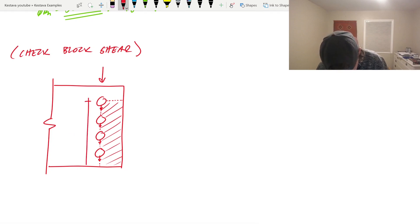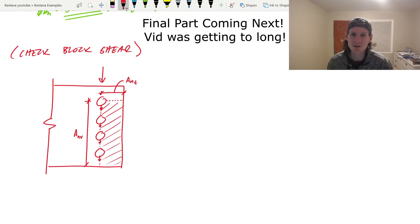This right here is actually known as Anv because that's area net for shear, and then this right here is known as Ant, area net tension. What are those? What's going on? Why do I need those? Let's head over to the steel manual and let's see what we got.